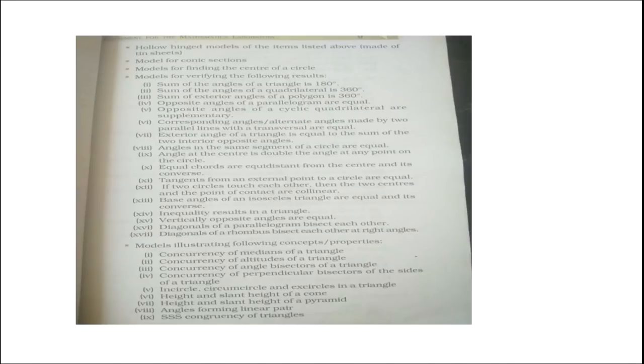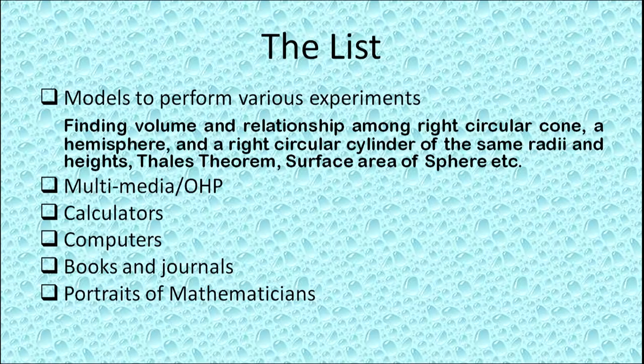There can be many more models: sum of angles of a triangle is 180°, sum of angles of a quadrilateral is 360°, diagonals of a rhombus bisect each other at right angles. Moreover, we can have models for finding volume and relationships among a right circular cone, hemisphere, and right circular cylinder of the same radii and heights, Thales' theorem, surface area of spheres, etc.